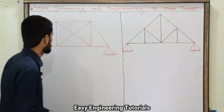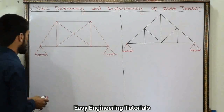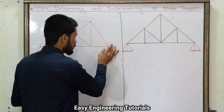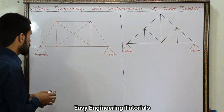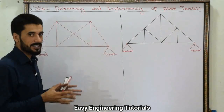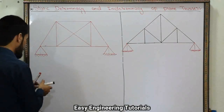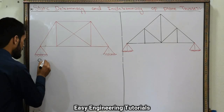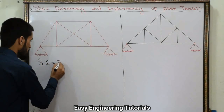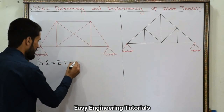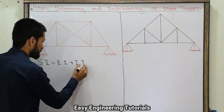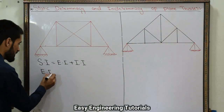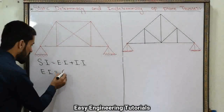Example number 1. Let's suppose a truss. One side has a roller support and the other side has a hinge support. We need to find the static indeterminacy of this truss. Static indeterminacy equals external indeterminacy plus internal indeterminacy, where external indeterminacy equals R minus 3.